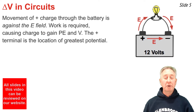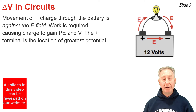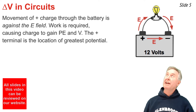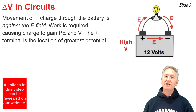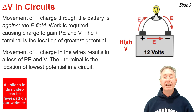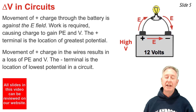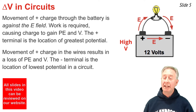Now let's consider the changes in electric potential as a positive test charge moves through an electric circuit. Beginning with the movement through the battery from the negative terminal to the positive terminal — this movement is against the direction of the electric field, so work must be done by the battery on the positive test charge. This causes the charge to gain electrical potential energy, making the positive terminal the location of highest electric potential. Once at the positive terminal, the charge moves through the wires, the light bulb, and back to the negative terminal — losing electrical potential energy along the way. By the time it returns to the negative terminal, it has the lowest electric potential, making the negative terminal the location of lowest potential in the circuit.